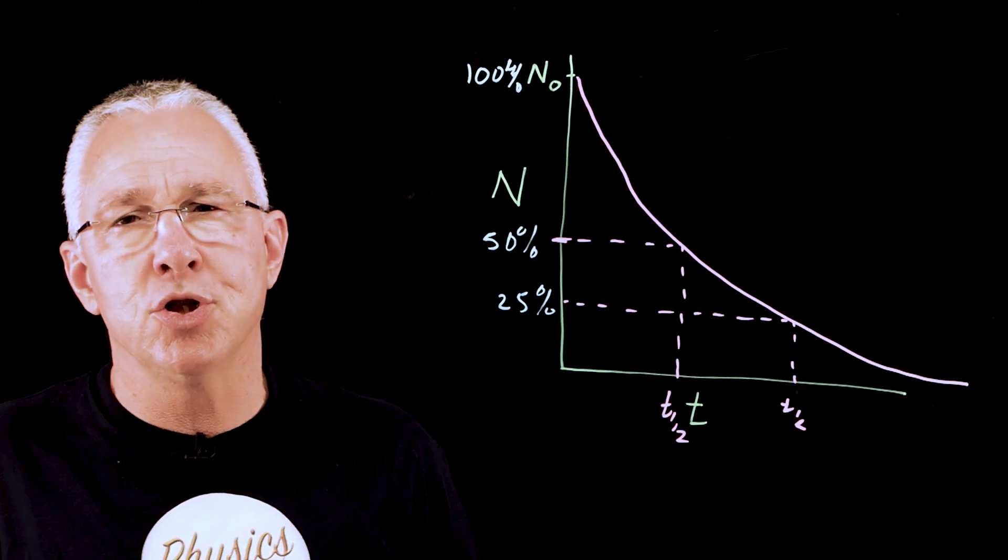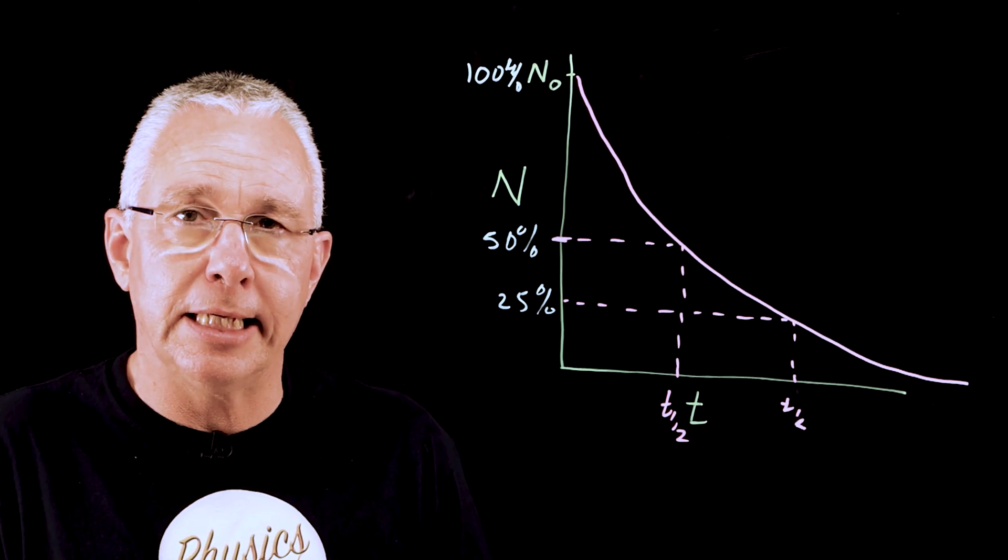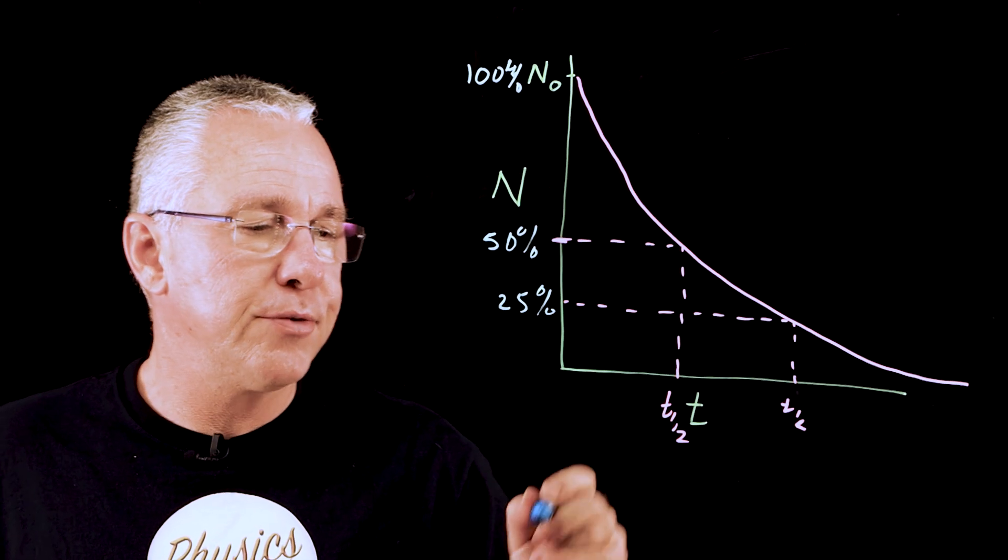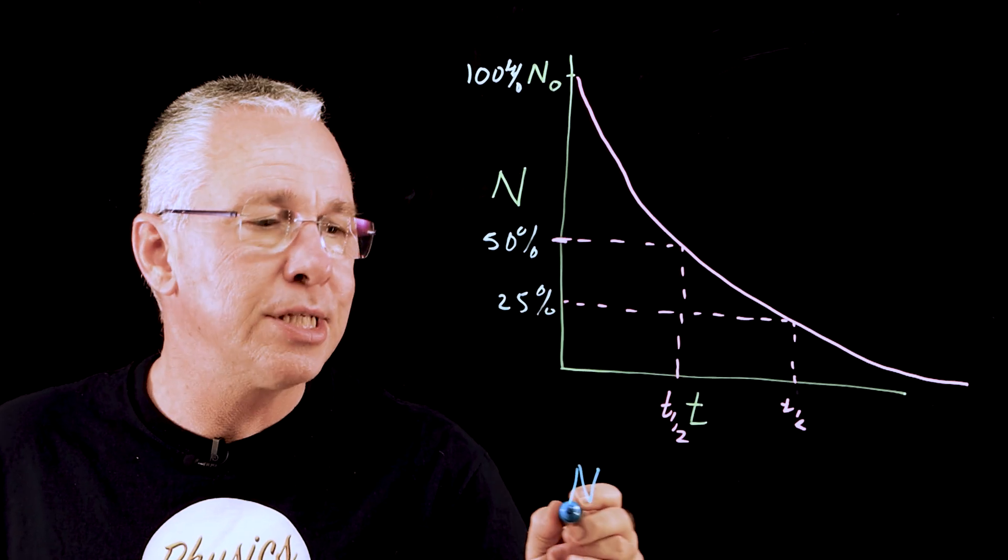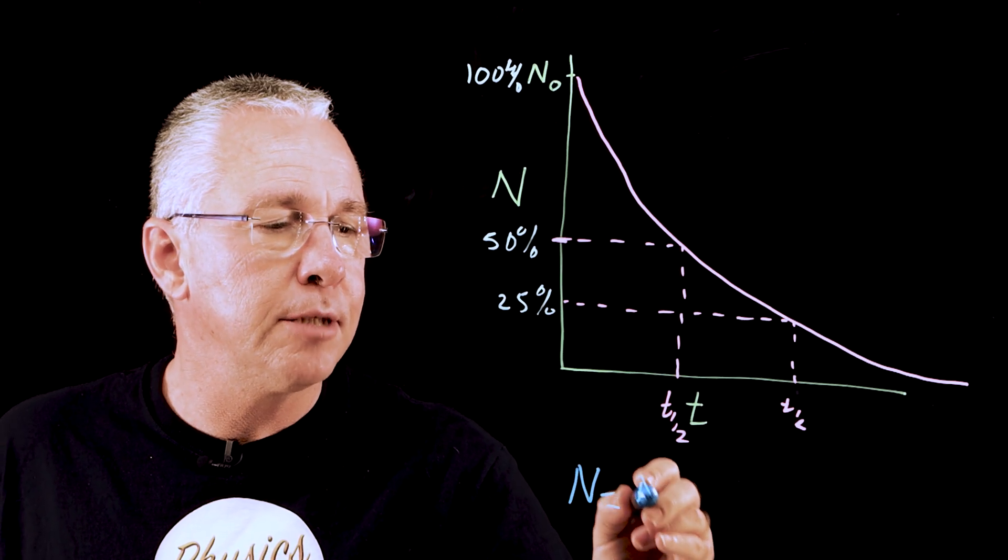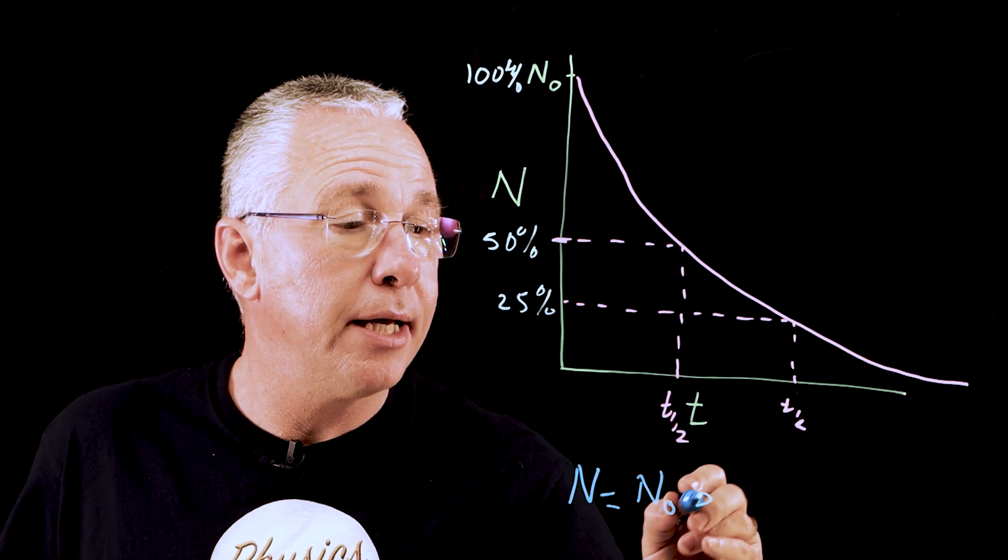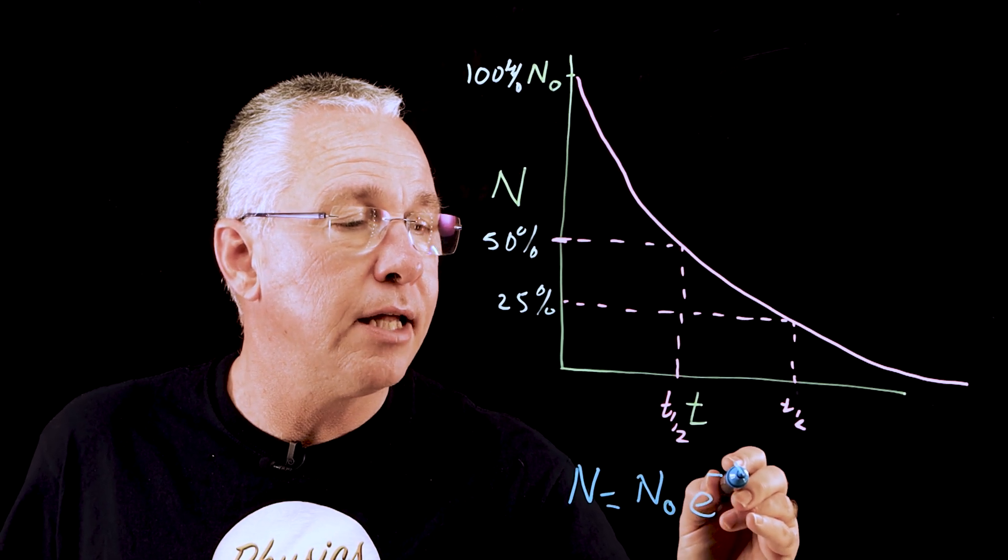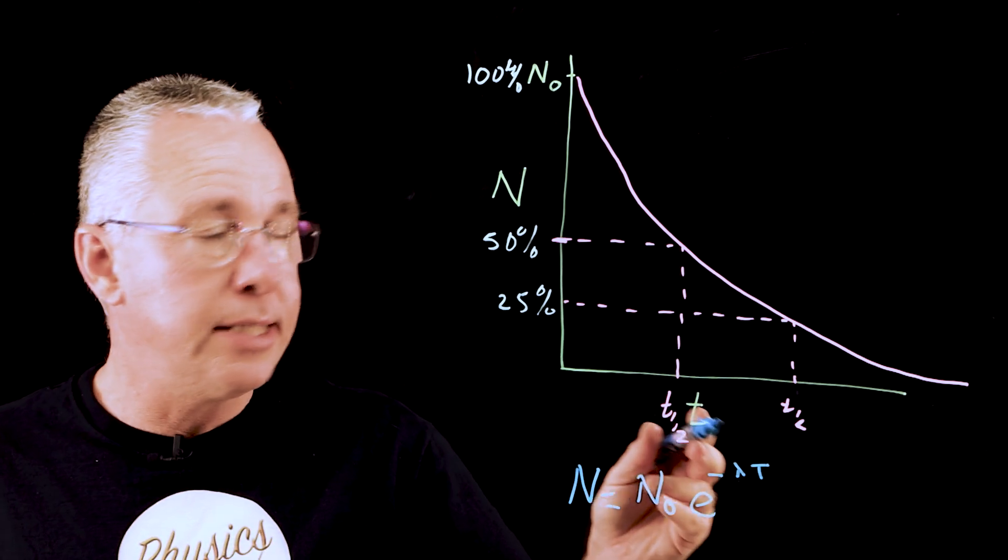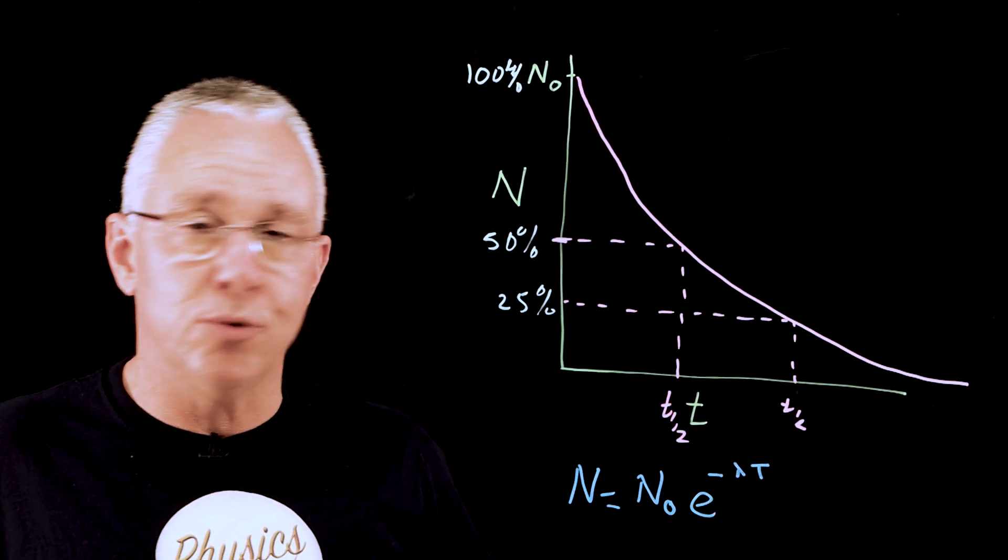Now, this graph can also be represented mathematically. And so, the mathematical formula for this relationship is n, where n, of course, is the amount left over multiplied by n0, our original amount, multiplied by e to the power of negative lambda t. t being the time you want to do the measurement.